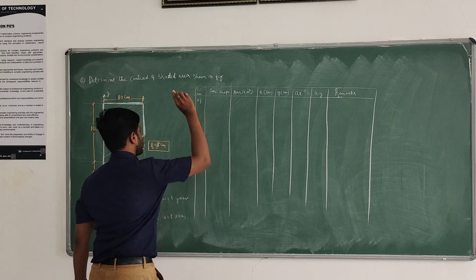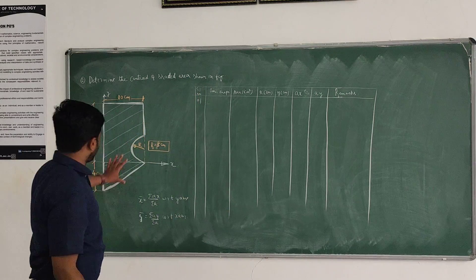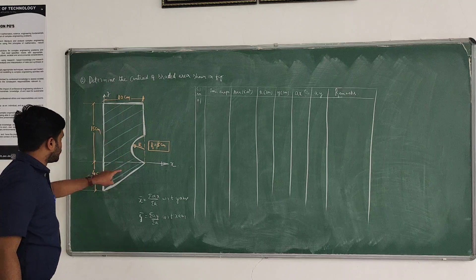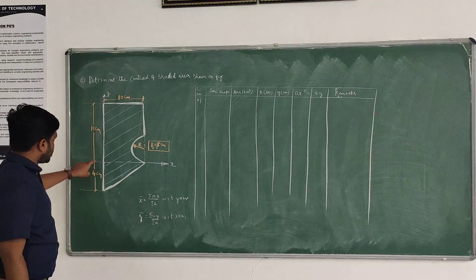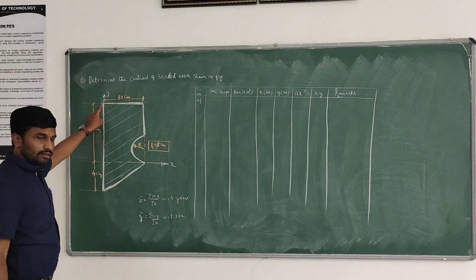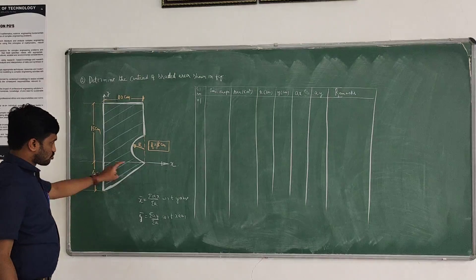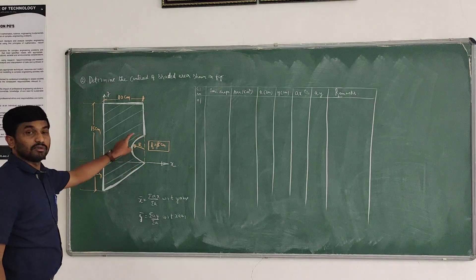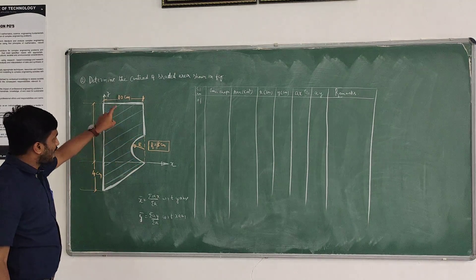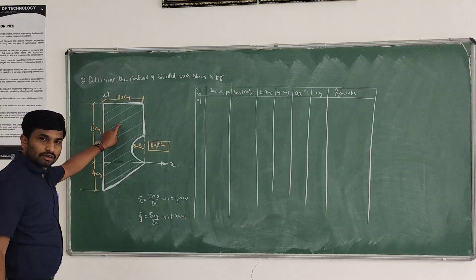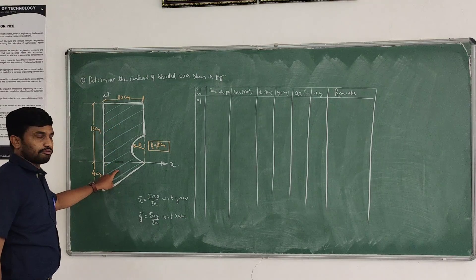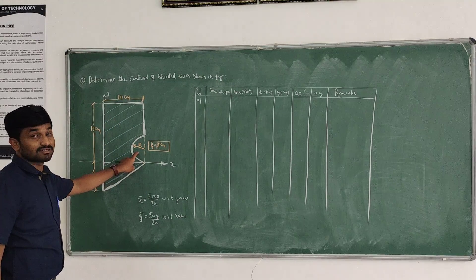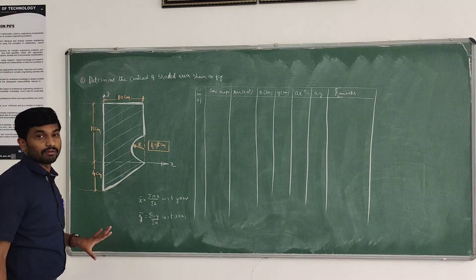For the first entry, how many basic shapes do we have? The first one is a rectangle — a 15 cm by 10 cm rectangle. The second one is a triangle. The third one is a semicircle. We have to add the rectangle plus triangle, and we have to remove the semicircle. So that is the problem setup.